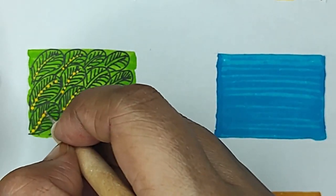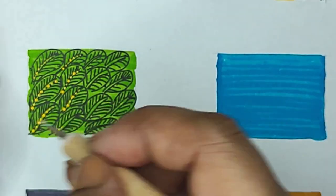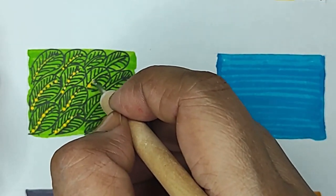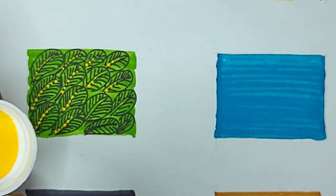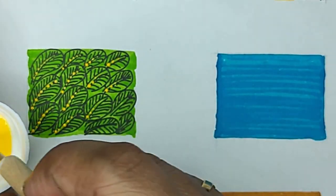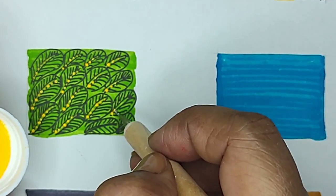Now this painting, Gond paintings were also called Dighna or Bhiti Chitra. They are two types. So Dighna was done on walls or on the floor, whereas Bhiti Chitra was only done on the walls.